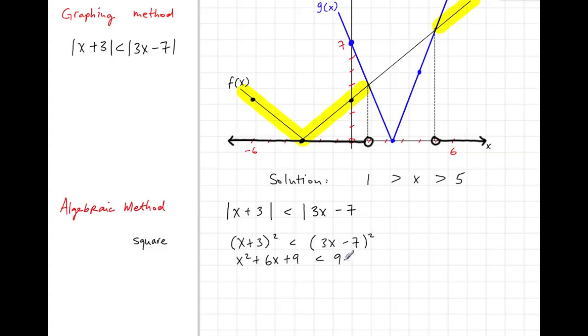We expand this in the normal way. Subtracting 9x² and adding 42x and subtracting 49 from both sides, we get x² + 6x + 9 < 9x² - 42x + 49, which simplifies to -8x² + 48x - 40 < 0.